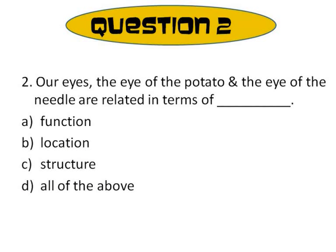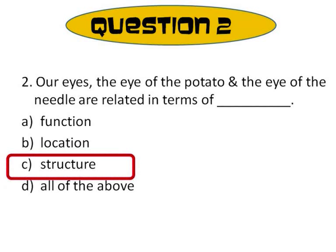Question 2: Are eyes — the eye of the potato and the eye of the needle — related in terms of A. function, B. location, C. structure, or D. all of the above? The correct answer is C, structure. The shape of our eyes, the shape of the eye of a potato, and the shape of the eye of a needle are all similar.